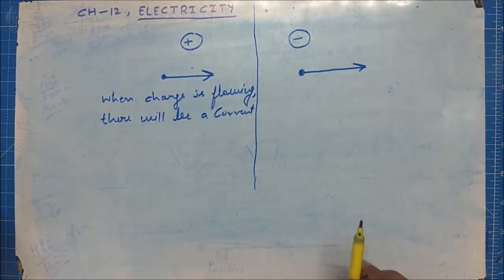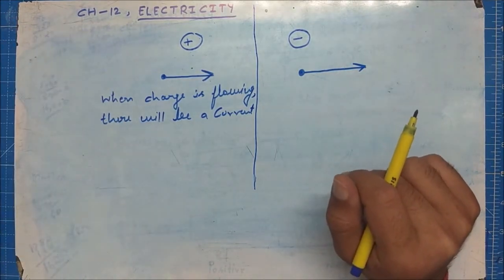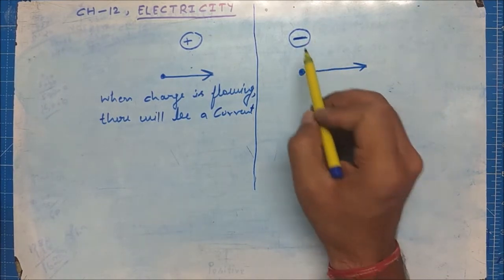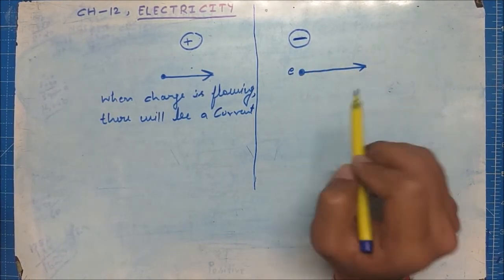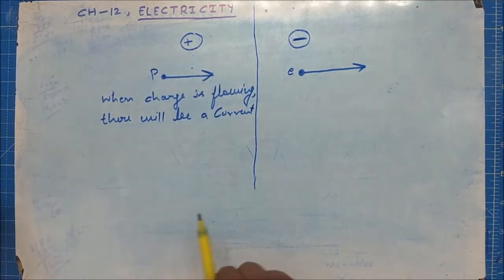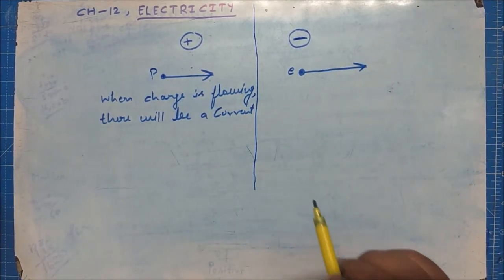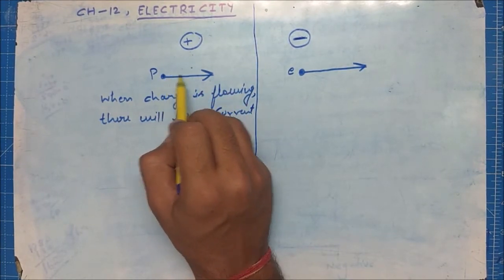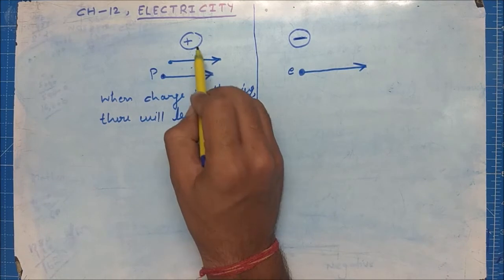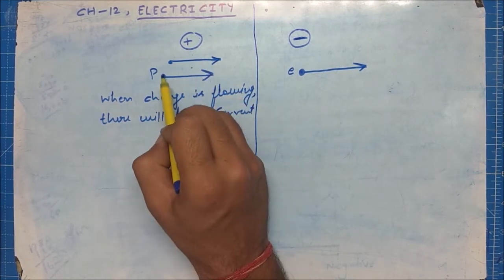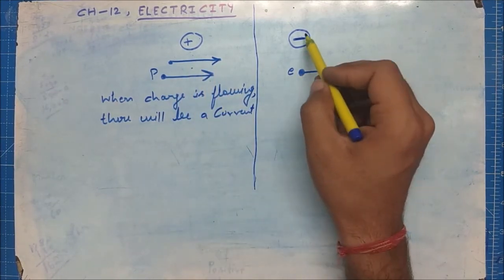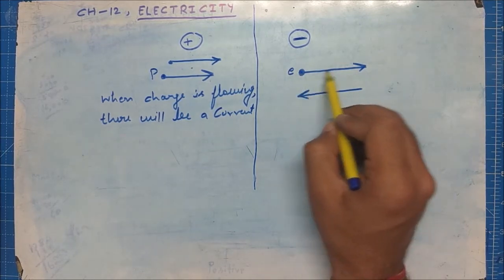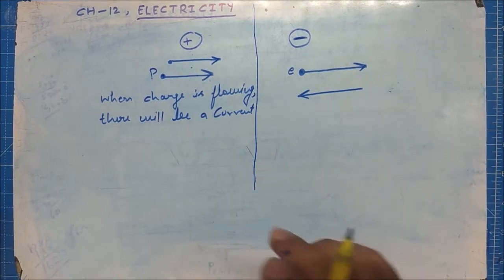Remember, inside metals we have free electrons, and electrons are negatively charged particles. Suppose an electron is flowing in this direction and a proton is flowing in the same direction — both have the same direction of movement, but their current directions will be opposite. Whenever positive charge flows in a particular direction, the direction of current is the same as the direction of charge. But for electrons or negative particles, the direction of current is opposite to the flow of charge.